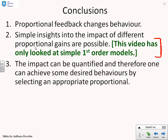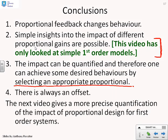The impact can be quantified. We've used tables and we've used simulations to show that we can see exactly what the impact is. What's the new time constant? What's the new steady state gain? And that means that we've now got some insight into how we might select an appropriate proportional to get the time constant or steady state gain that we need. Finally, a big warning. There was always an offset, which clearly is not desirable. And that's something to be covered later. The next video is going to give more precise quantification of the impact of proportional design so that we can do design a little bit more systematically.